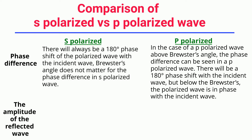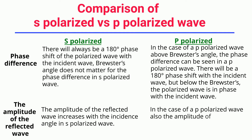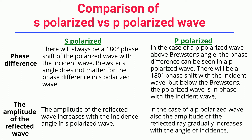The Amplitude of the Reflected Wave: The amplitude of the reflected wave increases with the incidence angle in S-Polarized waves. In the case of a P-Polarized wave, the amplitude of the reflected ray also gradually increases with the angle of incidence.